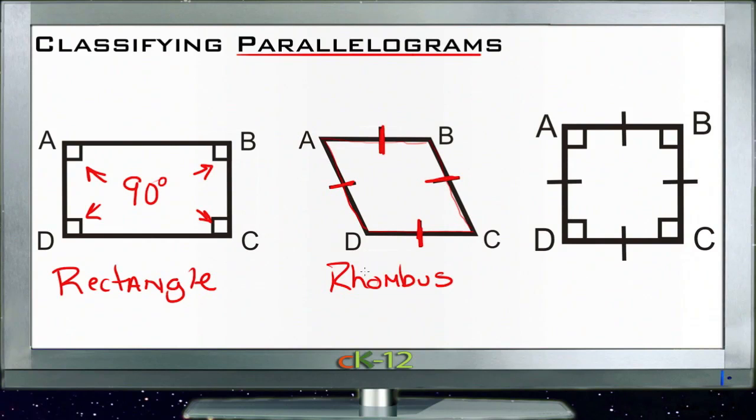And then finally, the most specialized shape we have here is the one we actually see the most often, and that's a square. A square is really a rectangular rhombus, or a rhomboid rectangle if you like. It's both. It has to have all four angles at 90 degrees and all four sides congruent. So if you have a parallelogram with those characteristics where all four sides are the same and all four angles are 90 degrees, then what you have is a square.